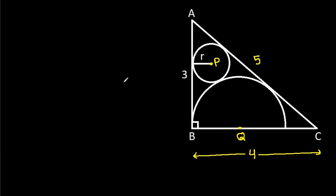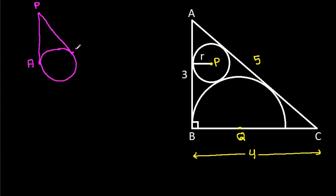Now, in any circle, from any external point P, if we draw two tangents to the circle, they will be equal. Suppose this point is A and this point is B, then PA will be equal to PB. And if the center of the circle is O, then AO will be equal to BO, that will be r.